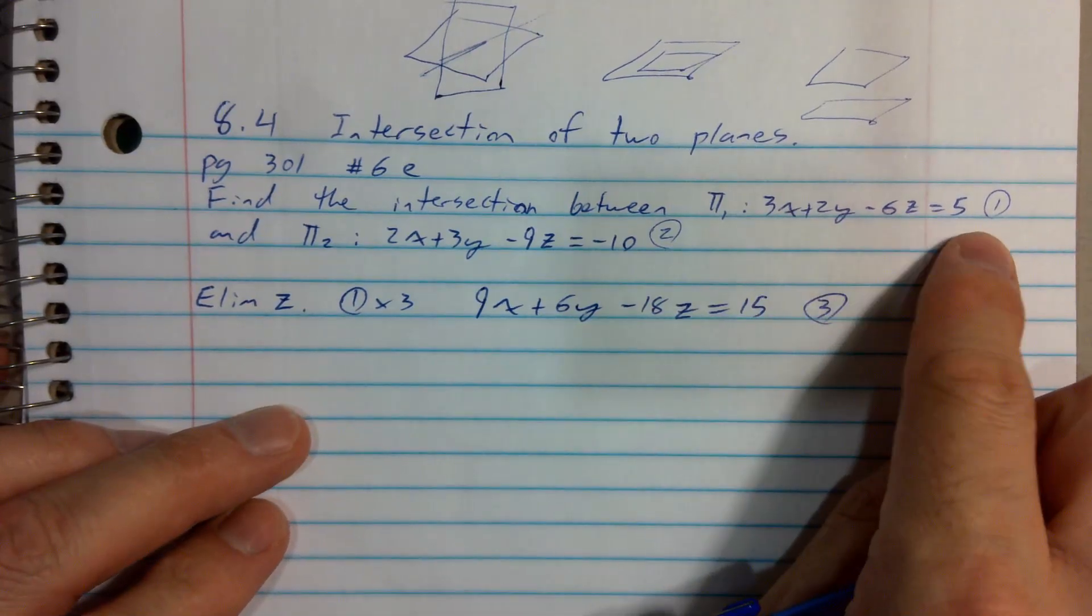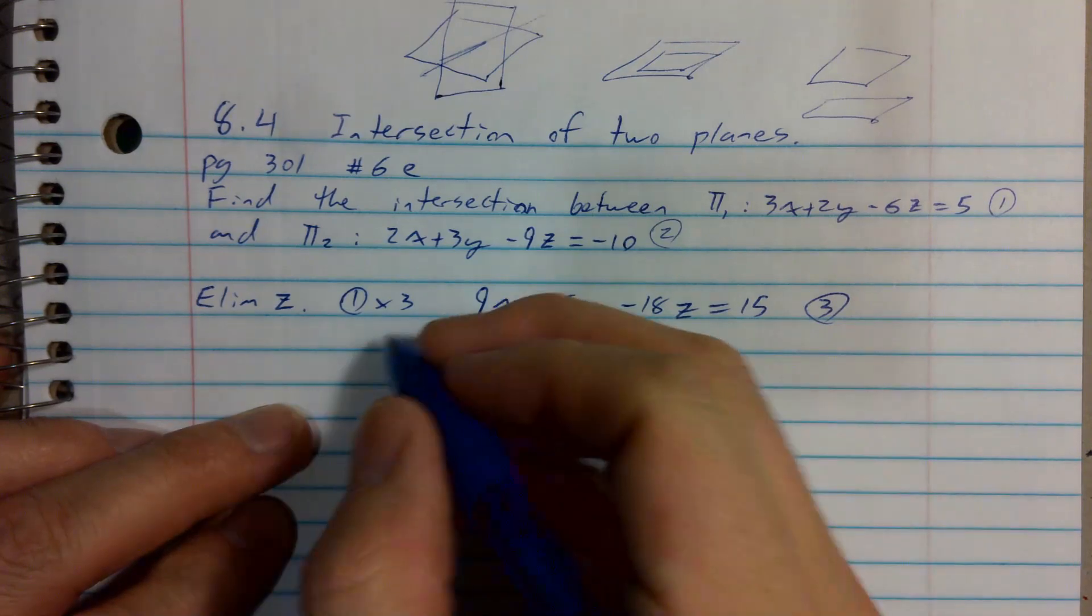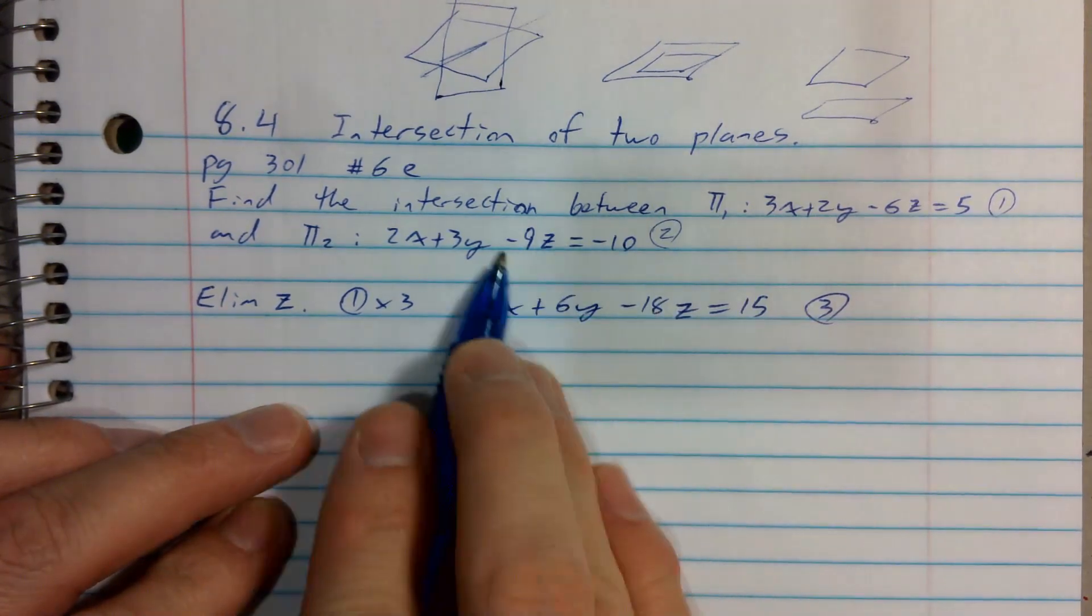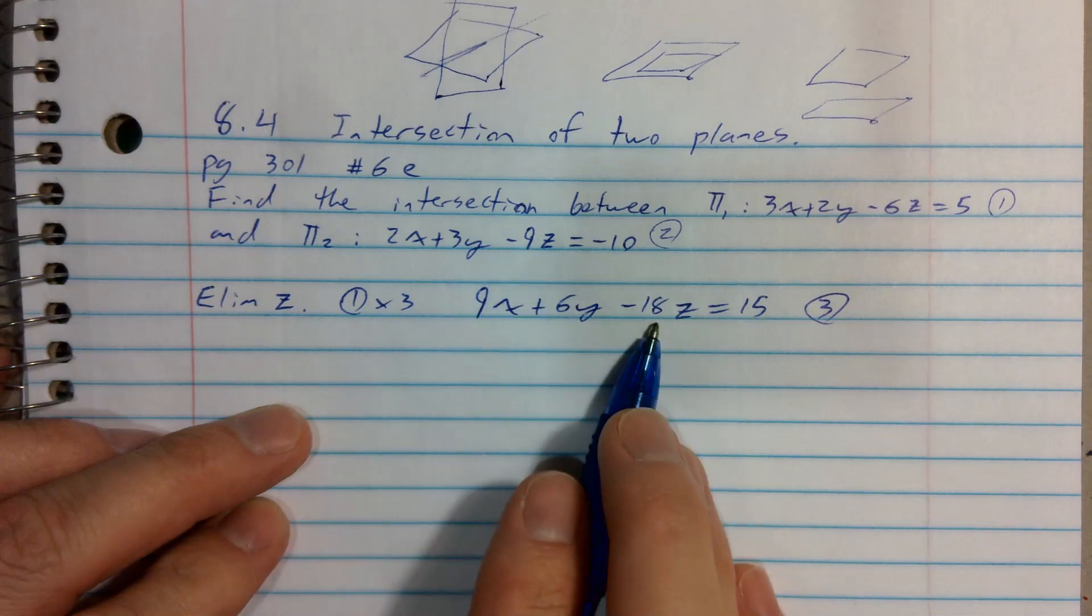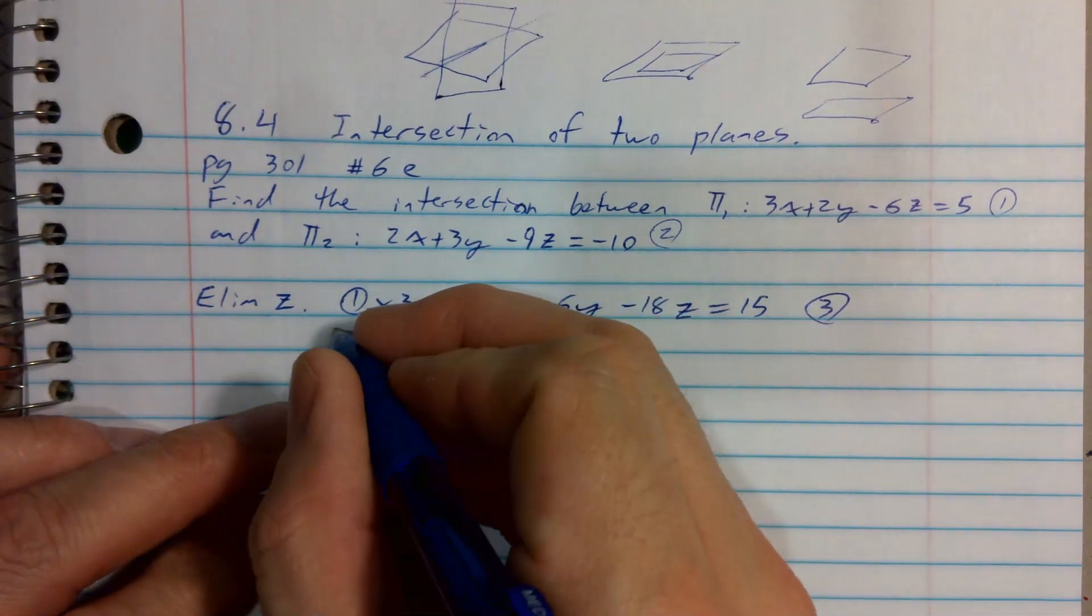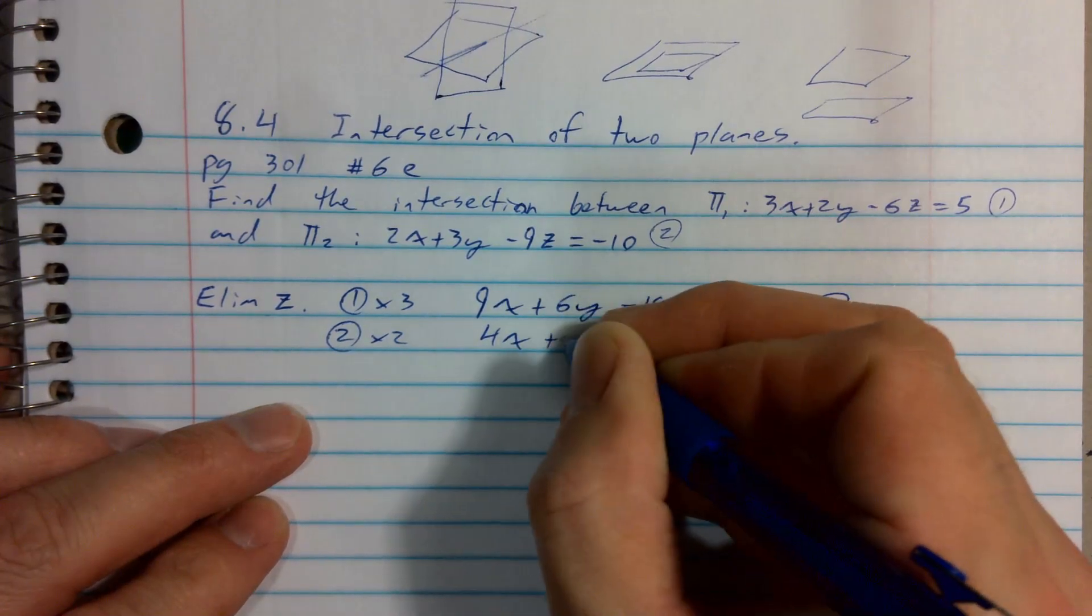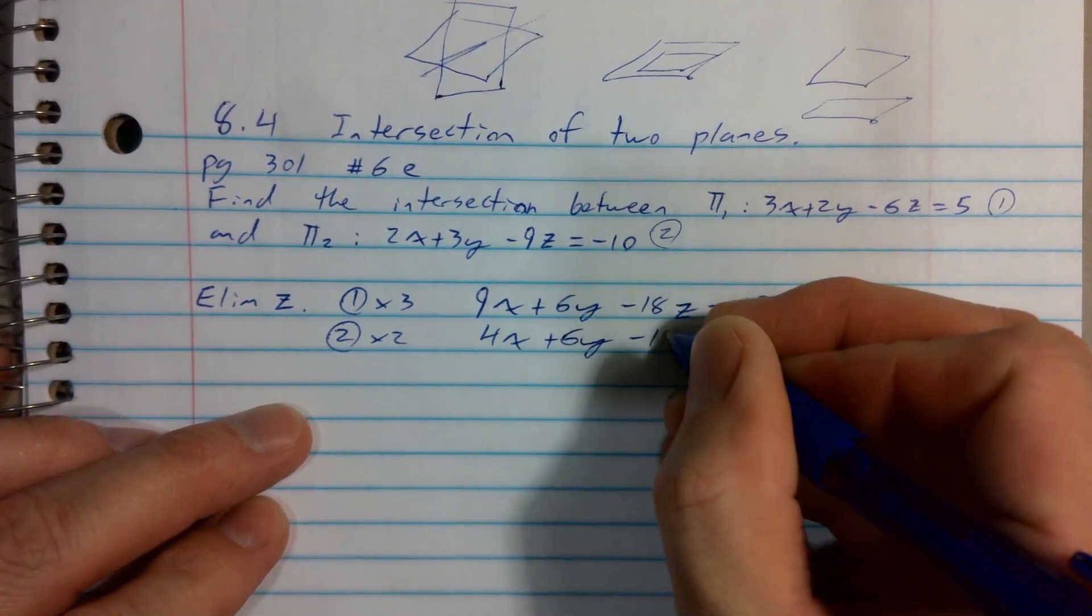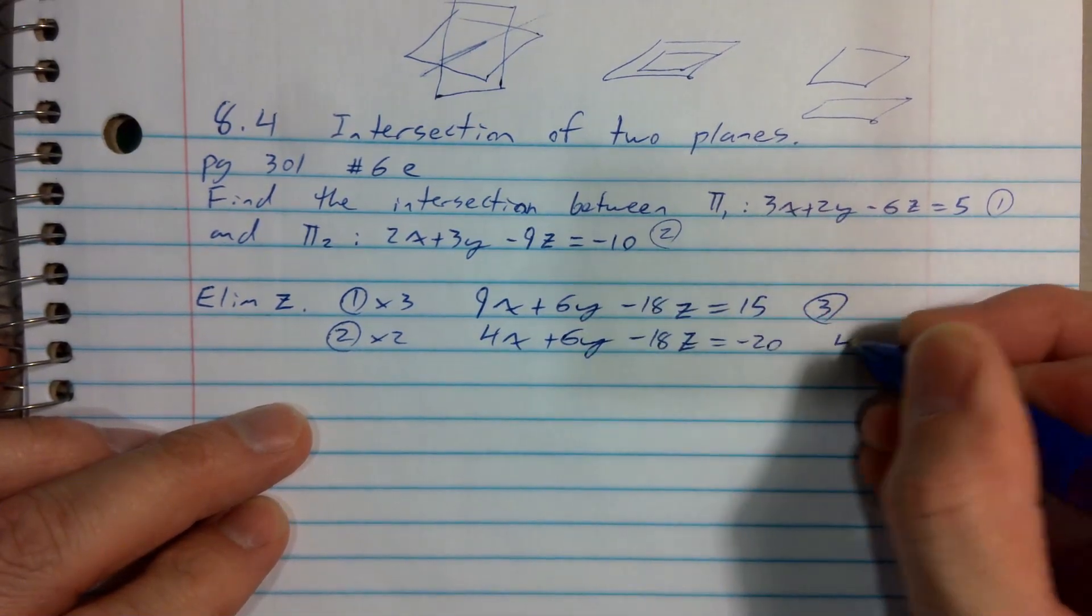Some people call this a Cartesian form. The constant doesn't really matter what side the constant is on. To get my zed coefficient from plane 2 to be 18 or negative 18, let's multiply by 2. So equation 2 multiplied by 2 gives me 4x plus 6y minus 18z equals negative 20. We'll call that statement 4.